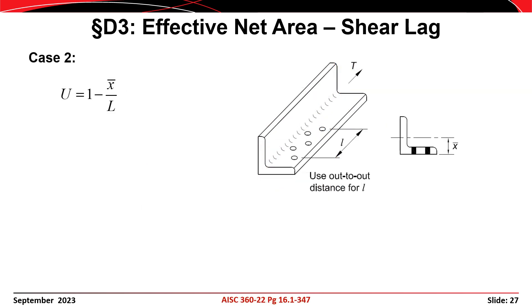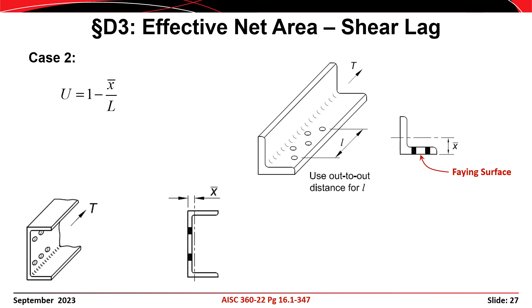For Case 2, U equals 1 minus x̄ over L. For an angle bolted through one leg, the member has two elements and only one is directly connected, so Case 2 applies. The length L is measured from the first bolt to the last bolt parallel to the applied load, and the connection eccentricity x̄ is measured from the faying surface on the connected leg to the centroid of the angle. A faying surface is a surface in contact with another component. For a channel bolted through its web, x̄ is the perpendicular distance from the back of the web to the centroid of the channel.